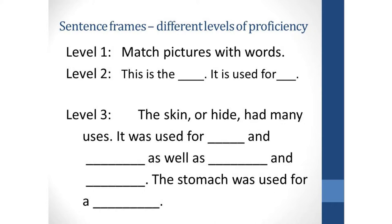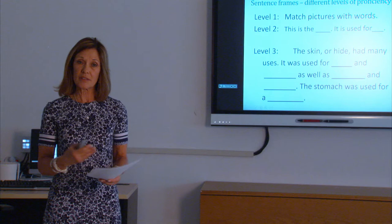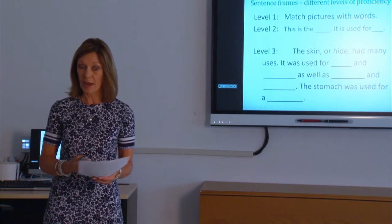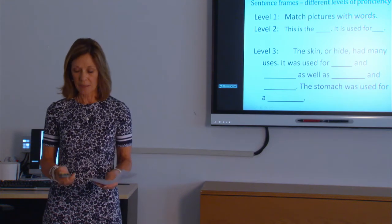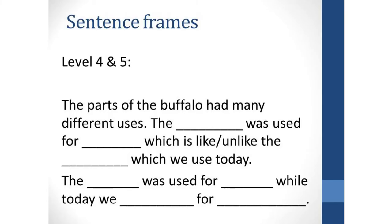Level three students are better able to understand open-ended questions and should be able to create sentences that are a little more complex. A sentence frame or paragraph could be provided depending on where they are at level three proficiency. For levels four and five, students are much better able to create paragraphs and complex language, so we might provide a whole paragraph or two for them to answer the question: 'What were the uses of the buffalo, and what does that tell us about the Aboriginal way of life?'